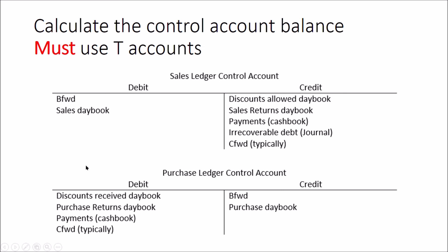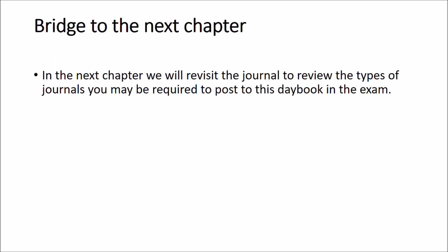For the trade payables control account T-account: start with a brought forward balance. The purchase day book gives a credit to the purchase ledger control account, with debit to expenses and VAT. On the debit side: discounts received, purchase returns, and payments on the credit side of the cash book. There are no irrecoverable debts for suppliers - that would imply the business is bankrupt - so that is not assumed within the system.